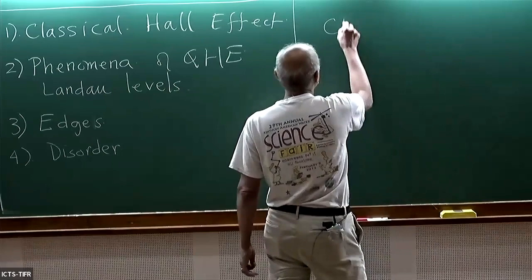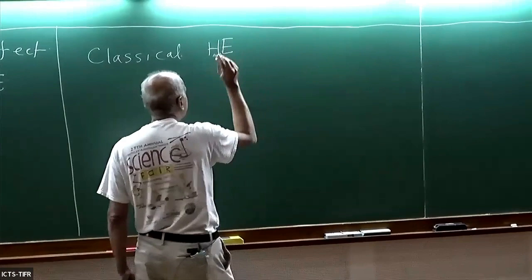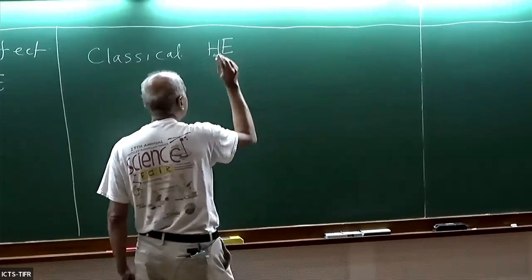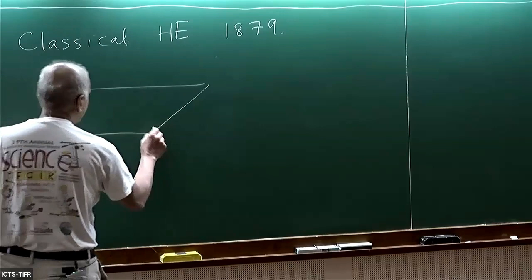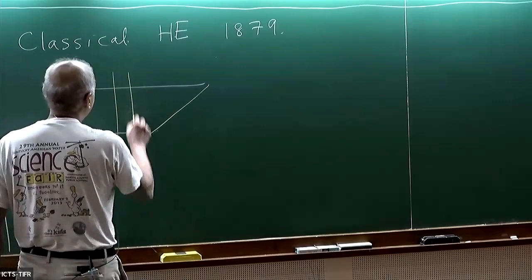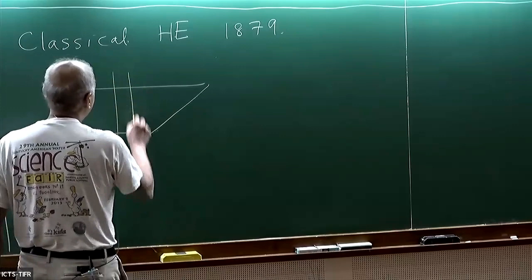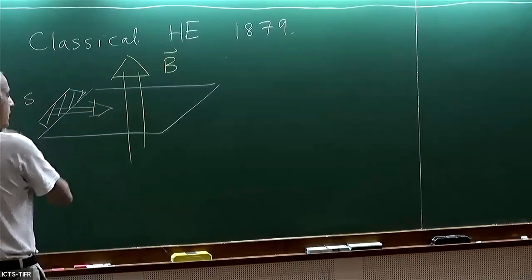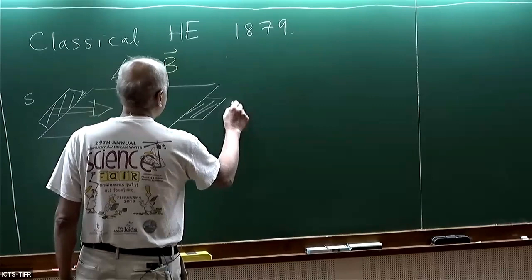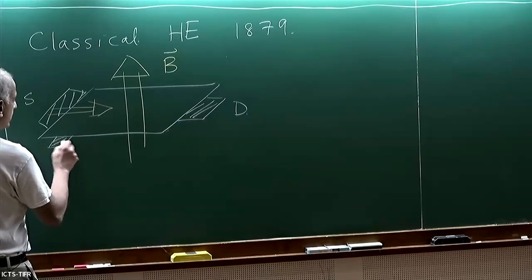Let's begin. The classical Hall effect was discovered in something like 1879 — more than 100 years ago — by someone called Edwin Hall. A very simple experiment: you take a two-dimensional metallic sheet, put a perpendicular magnetic field B through it, drive a current in one direction, and then ask what voltages of different kinds you measure.